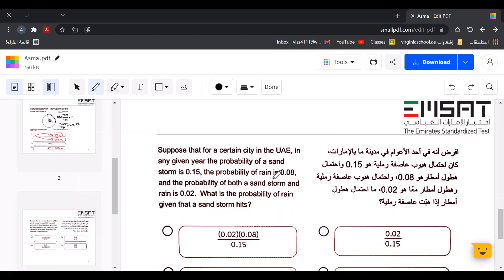We have here the sandstorm is 0.15, so I'm going to call it A, and then the rain, the probability of the rain is 0.08, so I'm going to call it B,